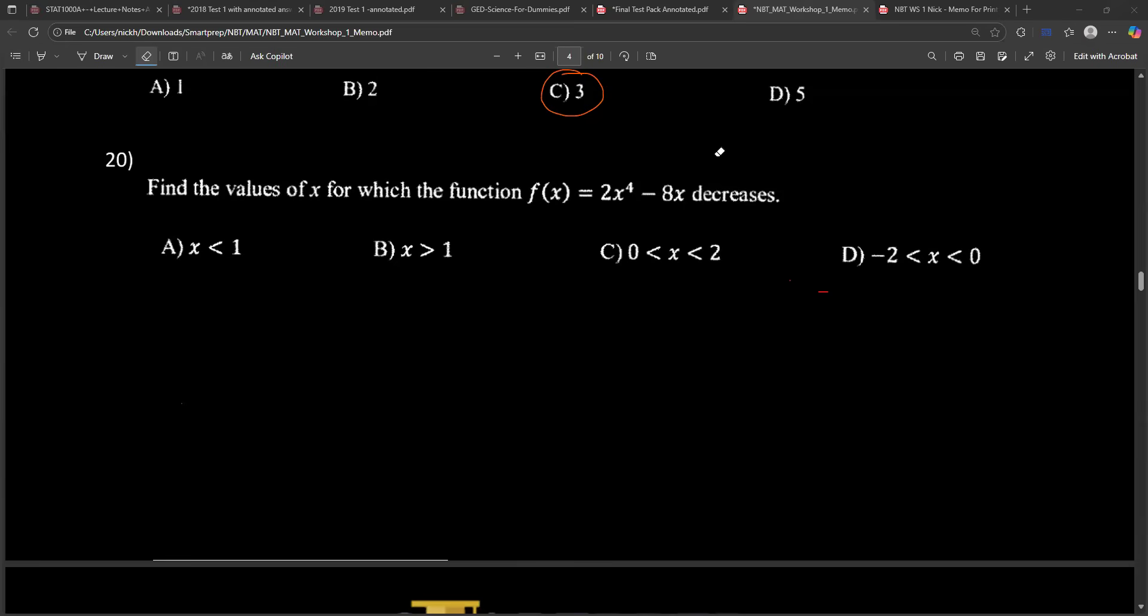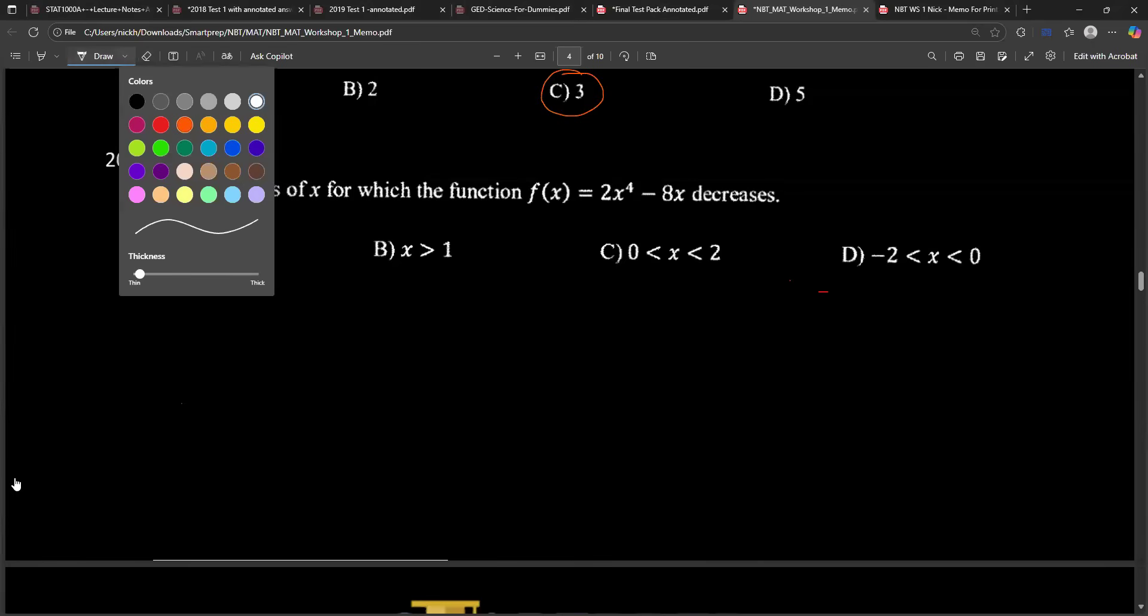Question 20. If you're new here you can check out the playlist and start from question one if you prefer. We are asked: find the values of x for which the function f(x) = 2x⁴ - 8x decreases. When we want to find out whether a function is increasing or decreasing, we have to find the derivative. I'm going to do this on the actual document so that I can save this and upload it to the website where you guys can download. Check out smartprep.co.za.